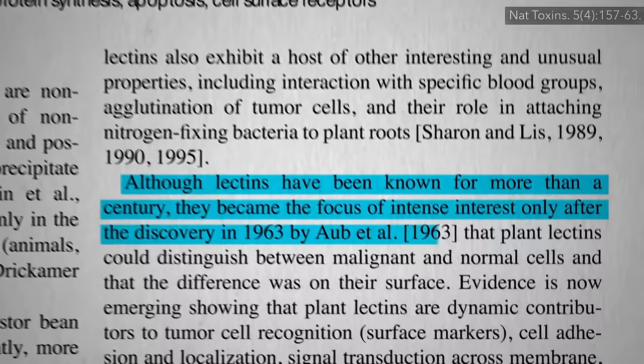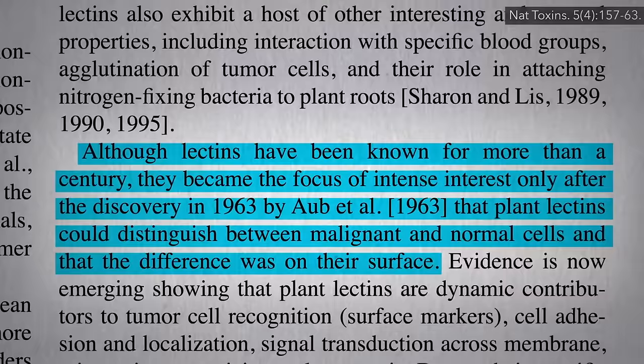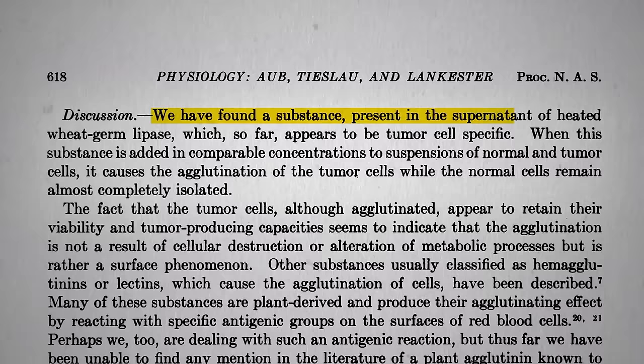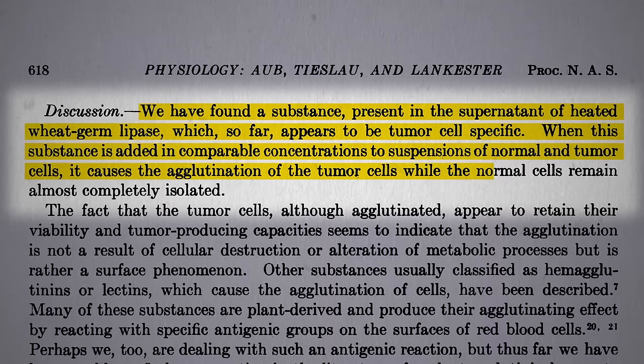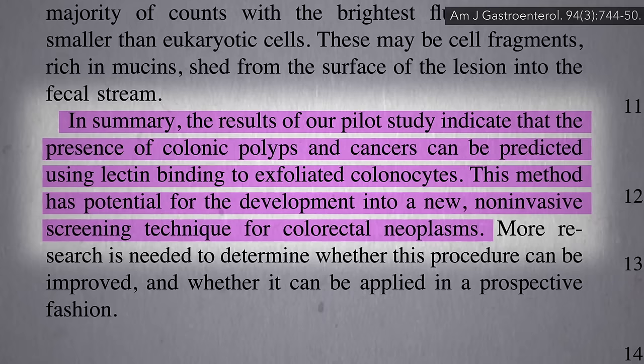Interest in the purported anti-tumor effect of plant lectins started with the discovery in 1963 that lectins could distinguish between cancer cells and normal cells. Researchers at Mass General found a substance in wheat germ, the lectin in whole wheat, which appeared to be tumor cell specific, clumping together the tumor cells while normal cells were left almost completely alone. So specific that you can take a stool sample from someone, and based on lectin binding to the colon lining cells that get sloughed off into the feces, you can effectively predict the presence of polyps and cancers.